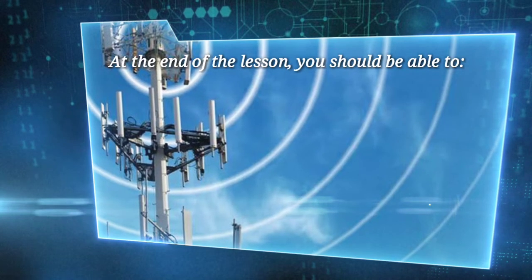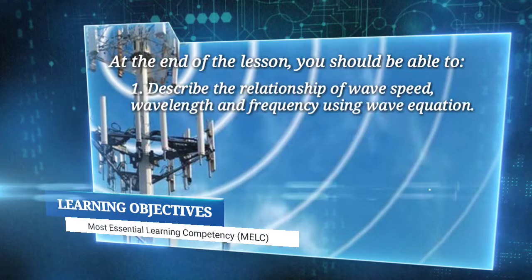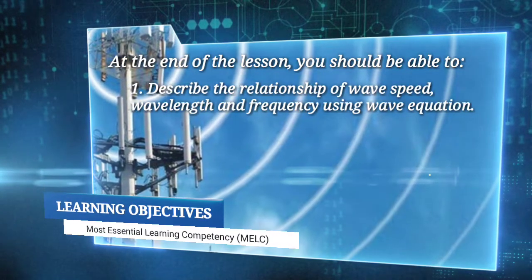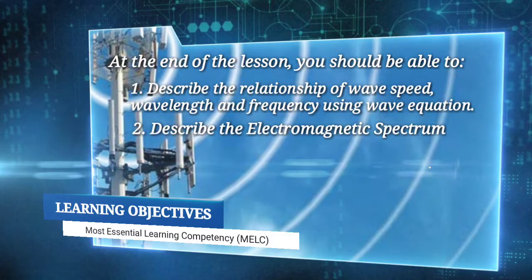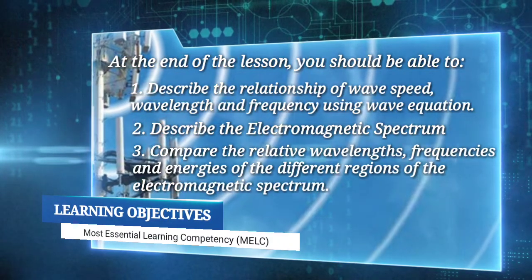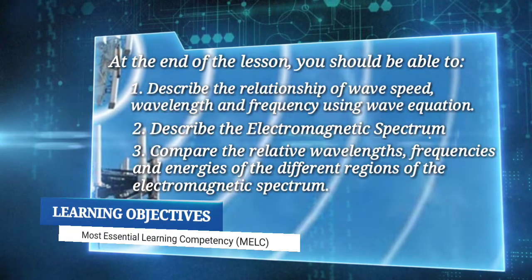At the end of the lesson, you should be able to: 1. Describe the relationship of wave speed, wavelength, and frequency using wave equation. 2. Describe the electromagnetic spectrum. And 3. Compare the relative wavelengths, frequencies, and energies of the different regions of the electromagnetic spectrum.